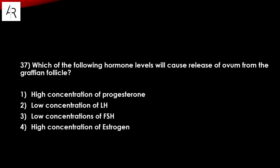Question number thirty-seven: which hormone level will cause release of ovum from the Graafian follicle? Progesterone level is high? No. Low concentration of LH? No. LH surge? Not that option. Low concentration of FSH? No. Option number four — high concentration of estrogen triggering LH surge and ovulation — is the answer.